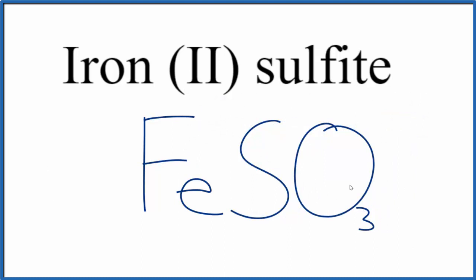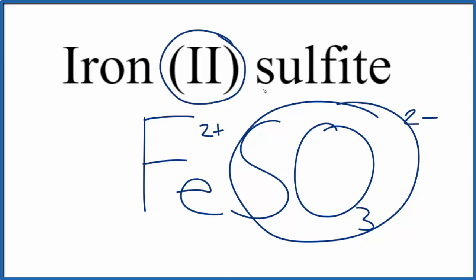If you are given this formula, asked to write the name, you know that the whole sulfite ion, the whole thing here is two minus, so the iron has to be two plus. That's why we put the Roman numeral two in the name.